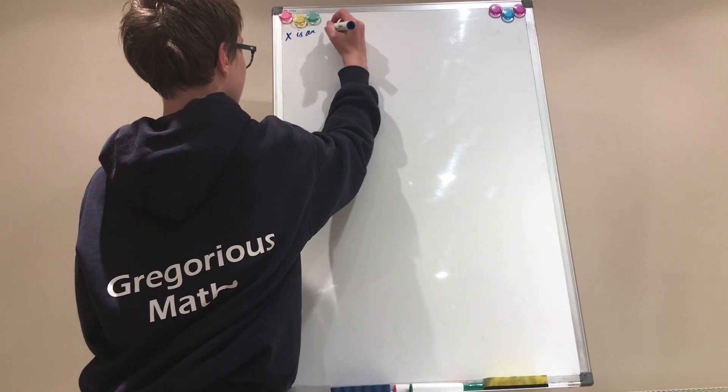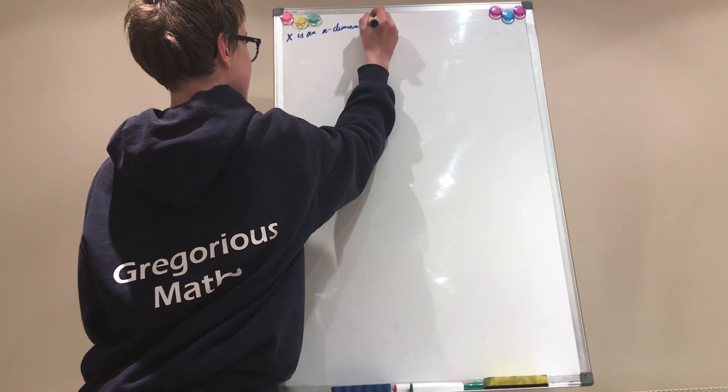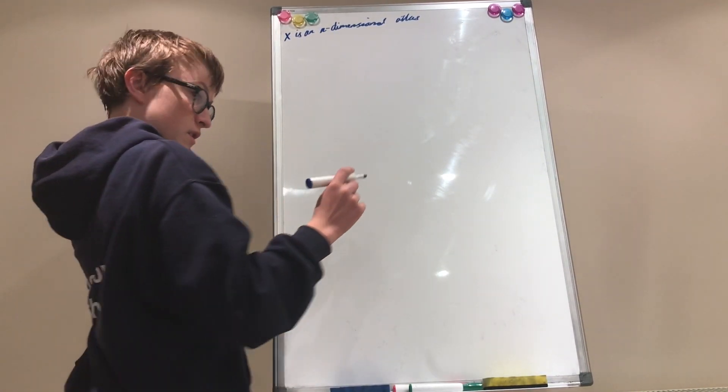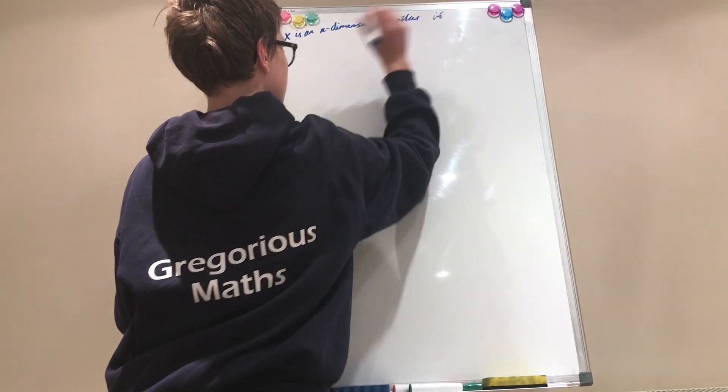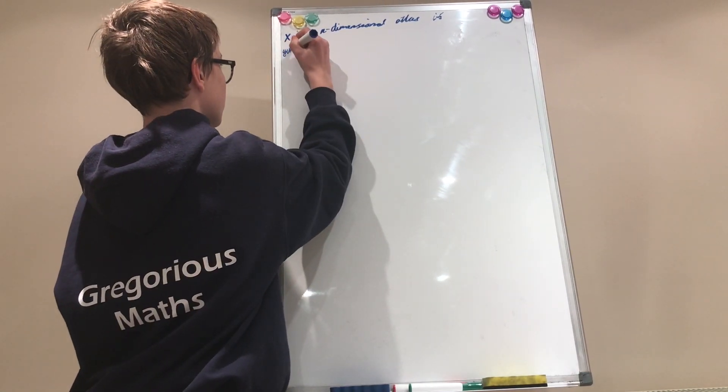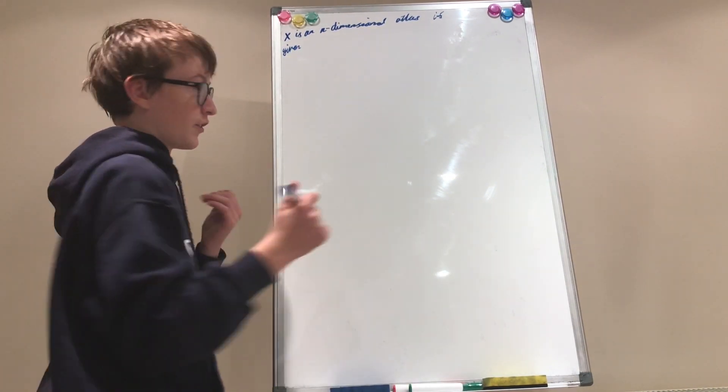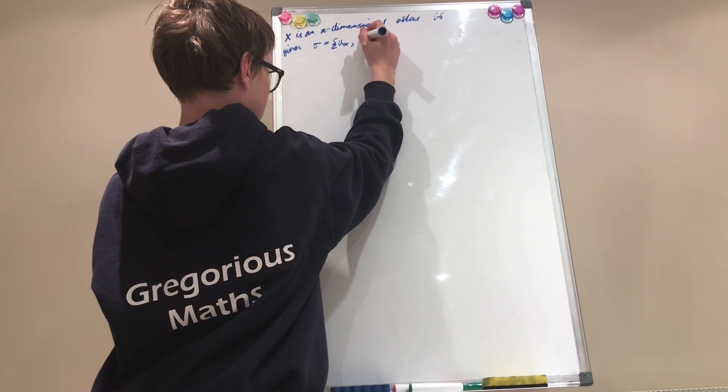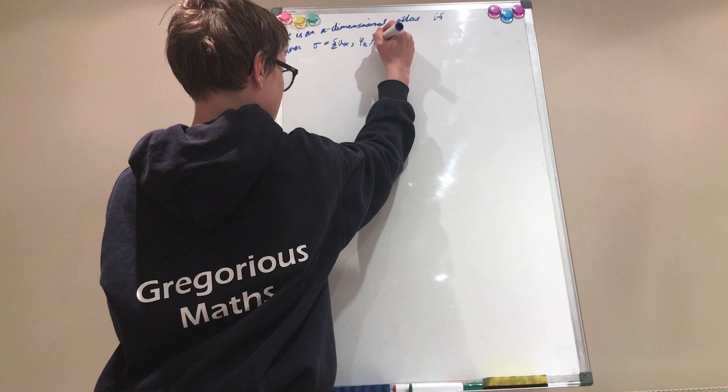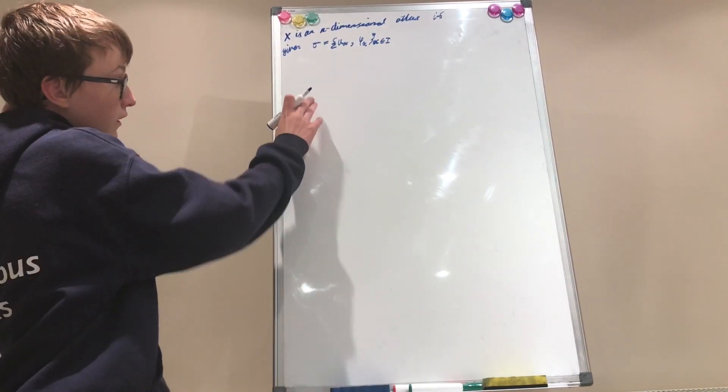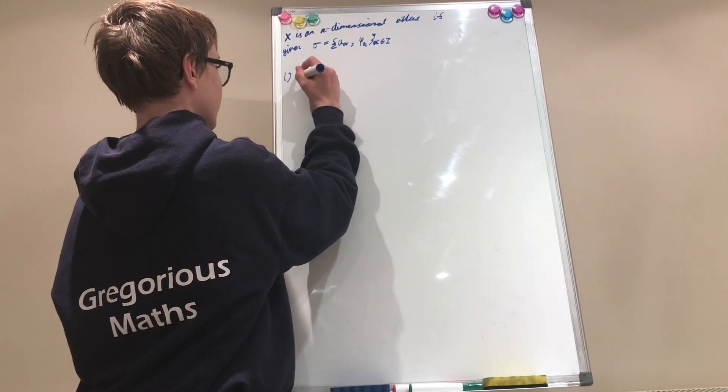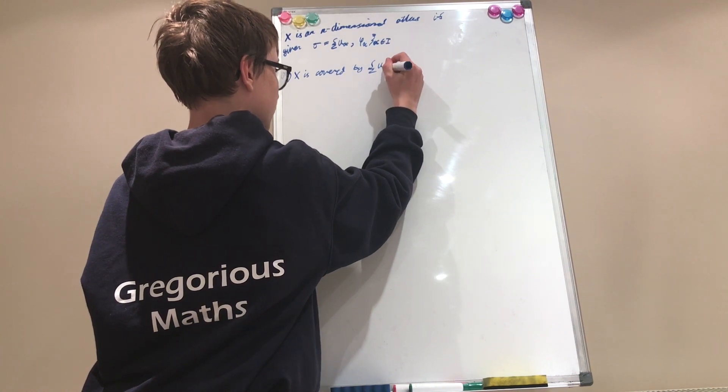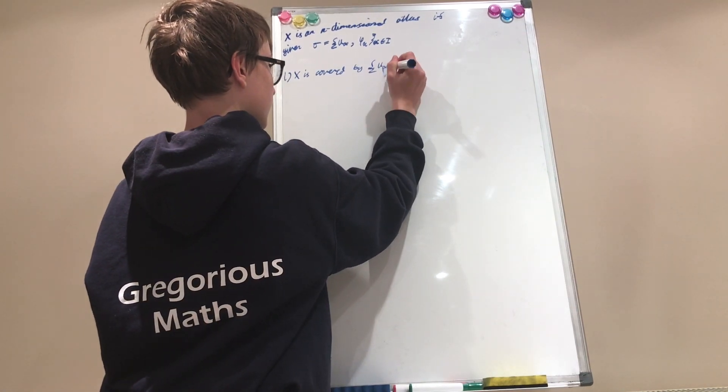So we define an atlas. Okay. An atlas is, so x is an n-dimensional atlas. Okay. If, oh, so given an if. Now, if we're given a chart or a collection of charts, let's call the collection of charts some random letter, I like sigma. Given sigma equal to a collection of charts, U sub alpha equipped with the homeomorphisms phi sub alpha indexed by some alpha in I. Okay. This satisfies three properties. The first one is, x is covered by U sub alpha. Sorry, I haven't written out alpha in a long time.